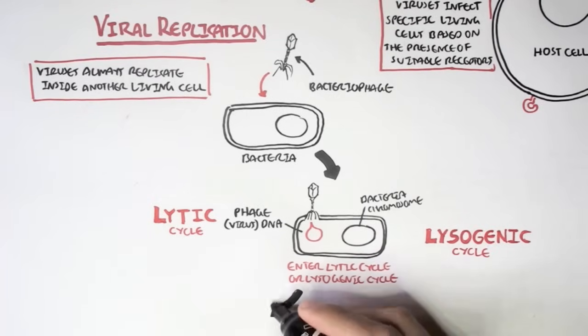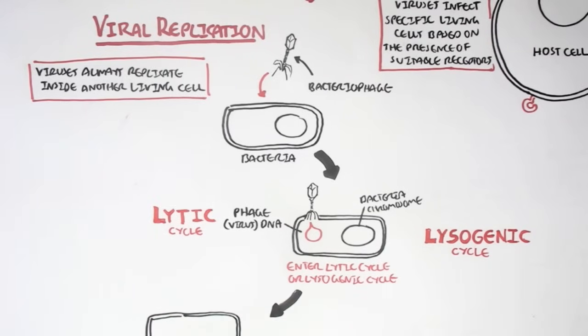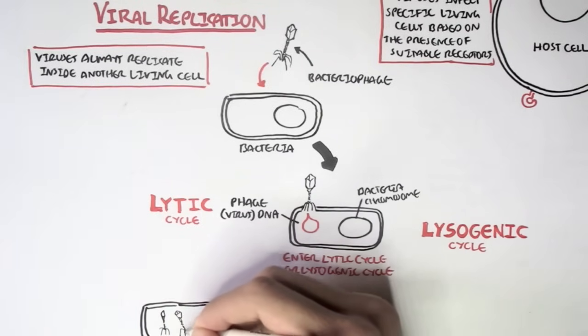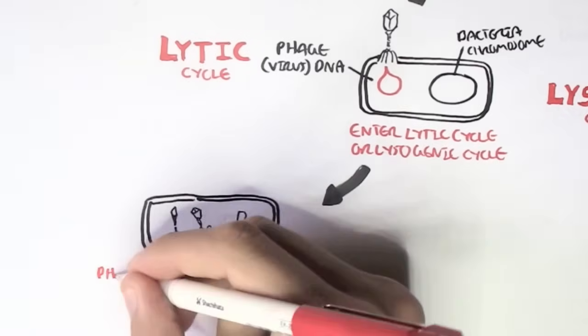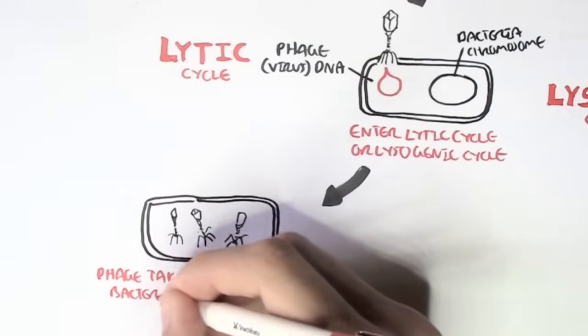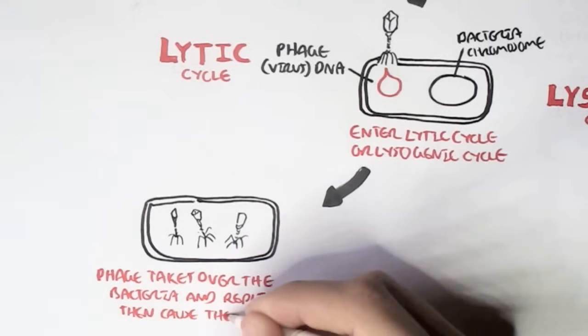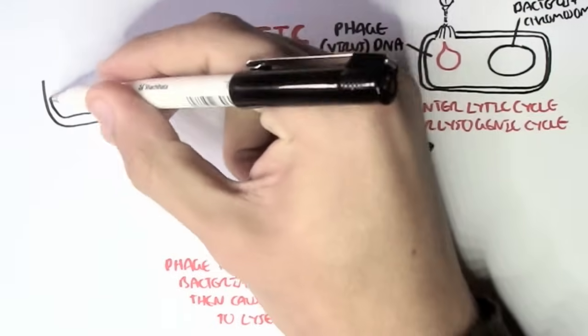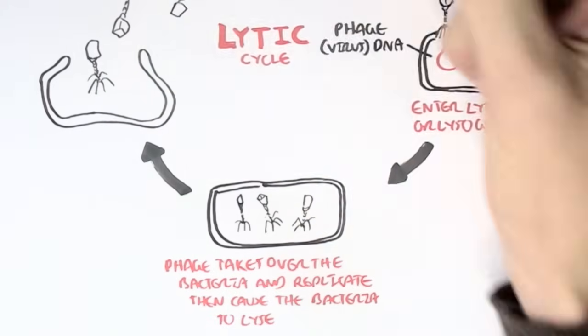Let's first follow the lytic cycle. In the lytic cycle, the phage DNA will take over the bacteria's cell machinery and begin synthesizing new bacteriophage DNA and proteins to create new bacteriophages, new viruses within the bacteria. The synthesis and accumulation of these new viruses will cause the bacteria to lyse, to burst basically, which will release these bacteriophages out. The bacteriophages can then infect other surrounding bacteria, and the cycle can continue on.